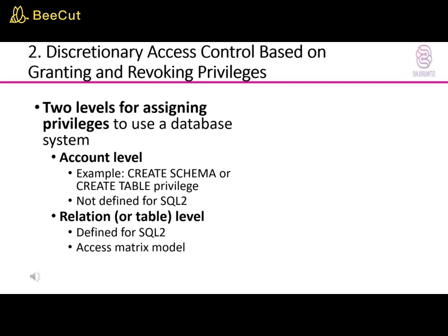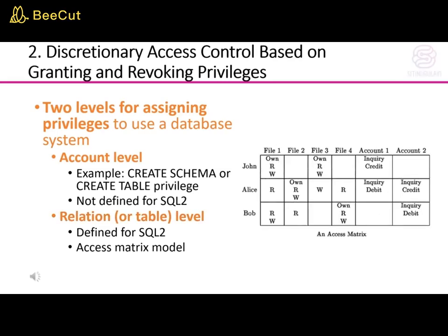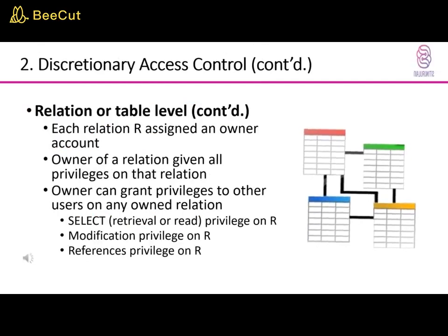Now we come to discretionary access control based on granting and revoking privileges. There are two levels for assigning privileges to use a database system: account level — for example, the CREATE SCHEMA or CREATE TABLE privilege — and relation or table level, defined for SQL2, which uses an access matrix model. At the relation or table level, each relation is assigned an owner account, and the owner of a relation is given all privileges on that relation.